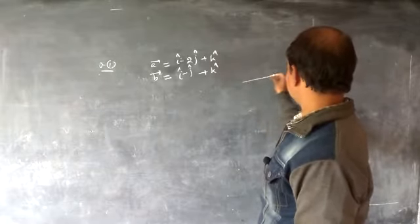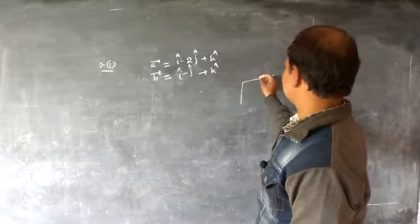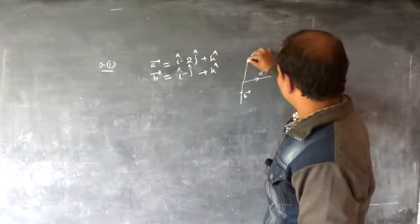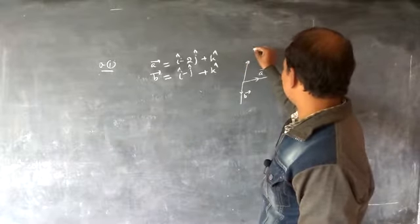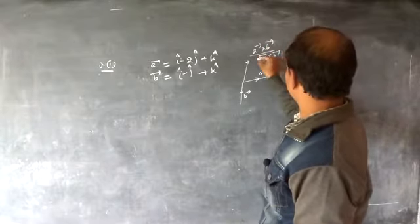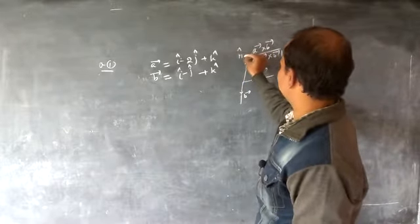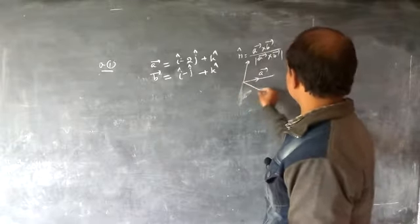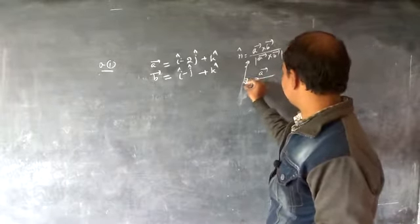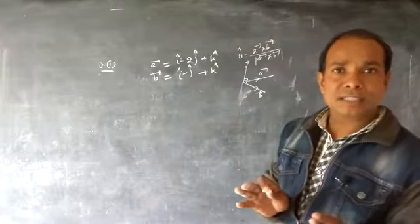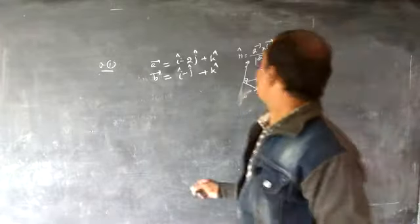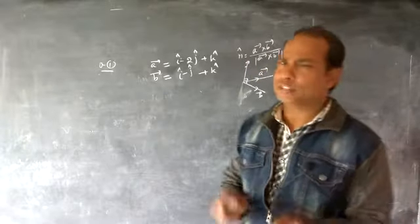A vector which is perpendicular to both vector a and vector b is given by a cross b upon the modulus of a cross b. This is also called the unit vector. So we have to find a cross b upon the modulus of a cross b. First of all we calculate a cross b.